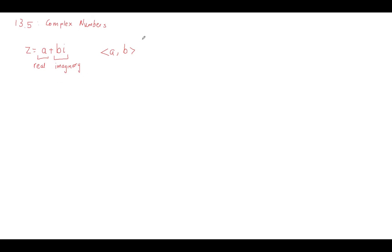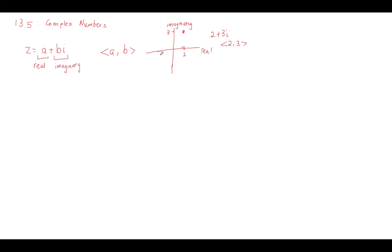When we think about how we graph it, it's not on an xy plane anymore because our two components are not x and y — our components are real and imaginary. So if I wanted to graph the complex number 2 plus 3i, that would be the same as graphing the point (2, 3) on these axes, where 2 goes on the real axis and 3 goes on the imaginary axis.